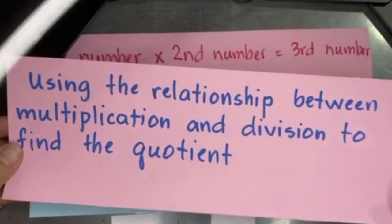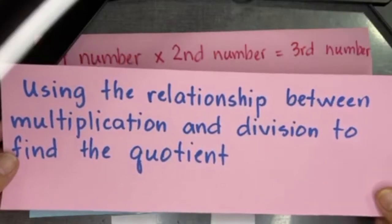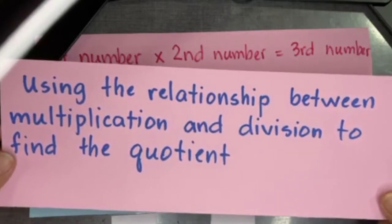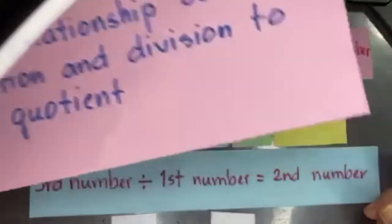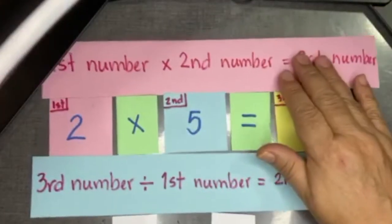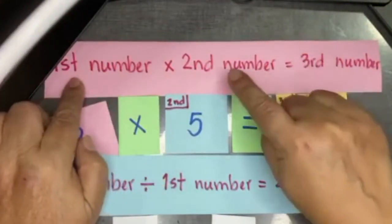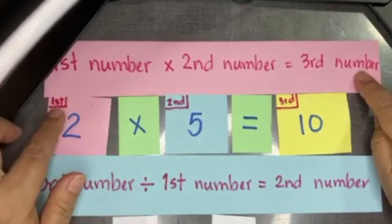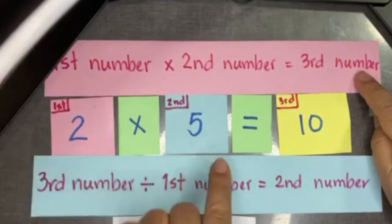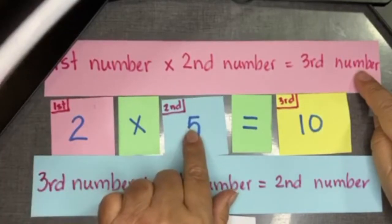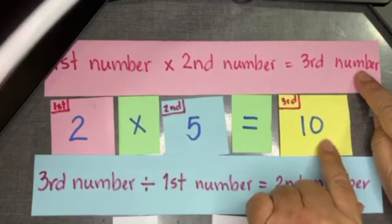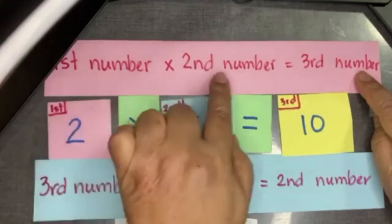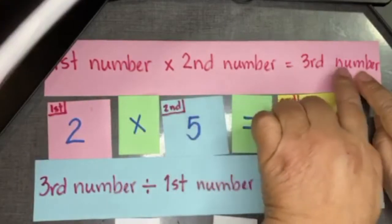Hello, today you will study about using the relationship between multiplication and division to find the quotient. Say we have the first number, the second number, and the third number. Here my first number is two and my second number is five. My third number is ten. The first number times the second number equals the third number.